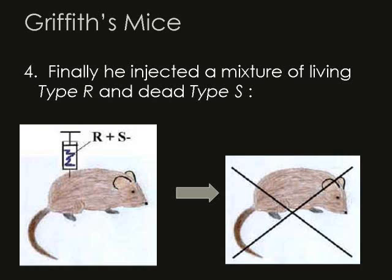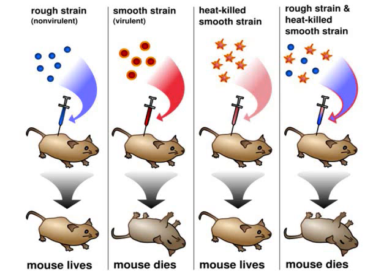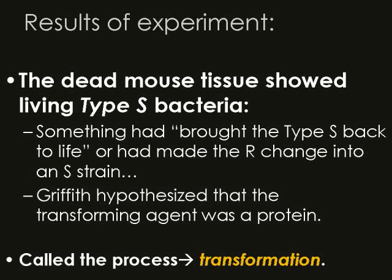Something from the type S that caused the mouse to die was being transferred over to the type R. The rough strain, which is living, combined with the dead smooth strain — the virulent one — resulted in a dead mouse. The dead mouse tissue showed living type S bacteria. Something had brought the type S back to life, or had made the R change into an S strain. Griffith hypothesized that this transforming agent was a protein — we will later see that this is incorrect. He calls this process transformation, which happens currently today with bacteria, and is a common way that they can gain genetic material.